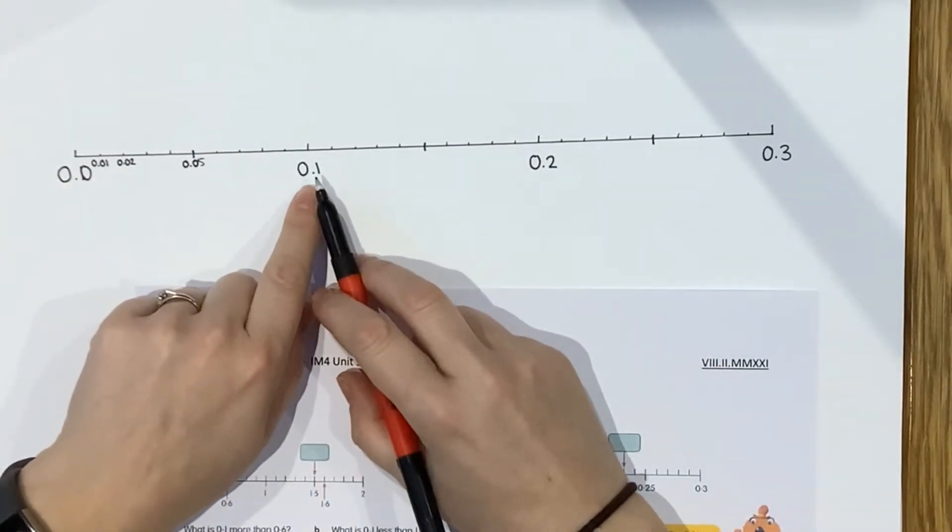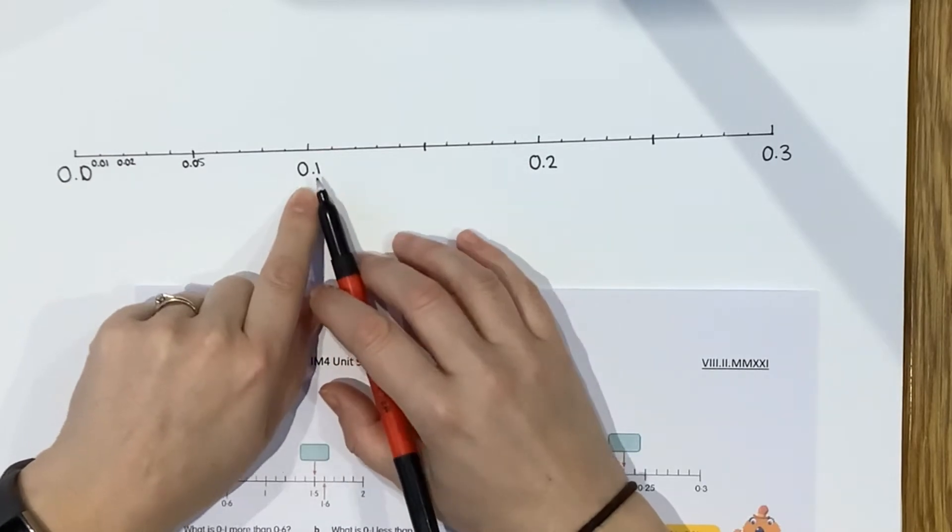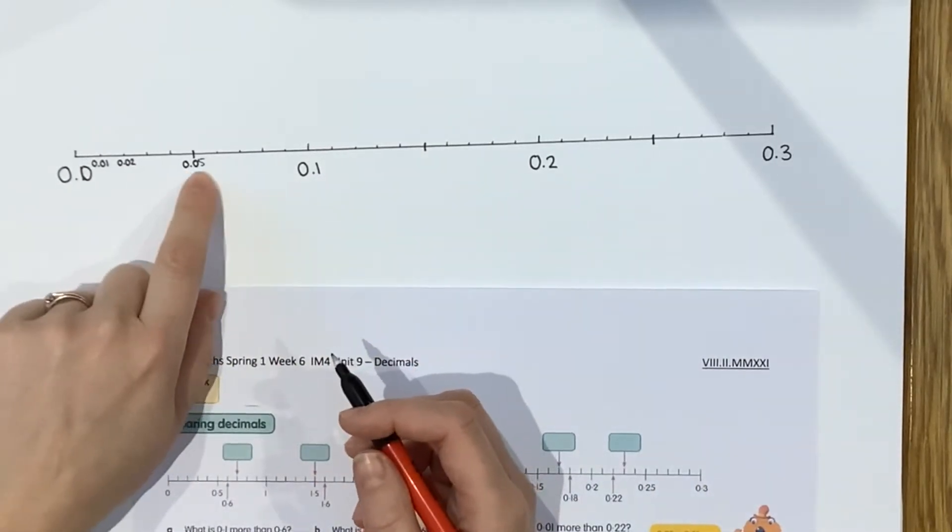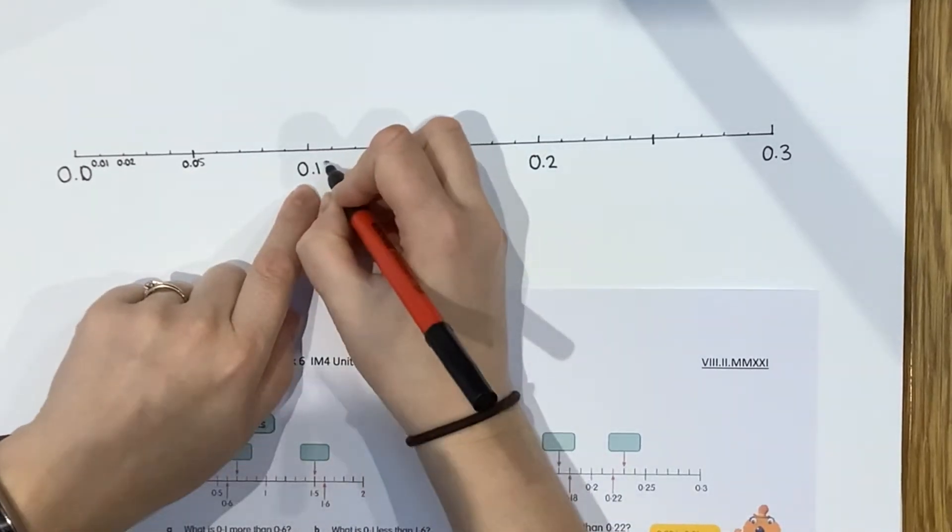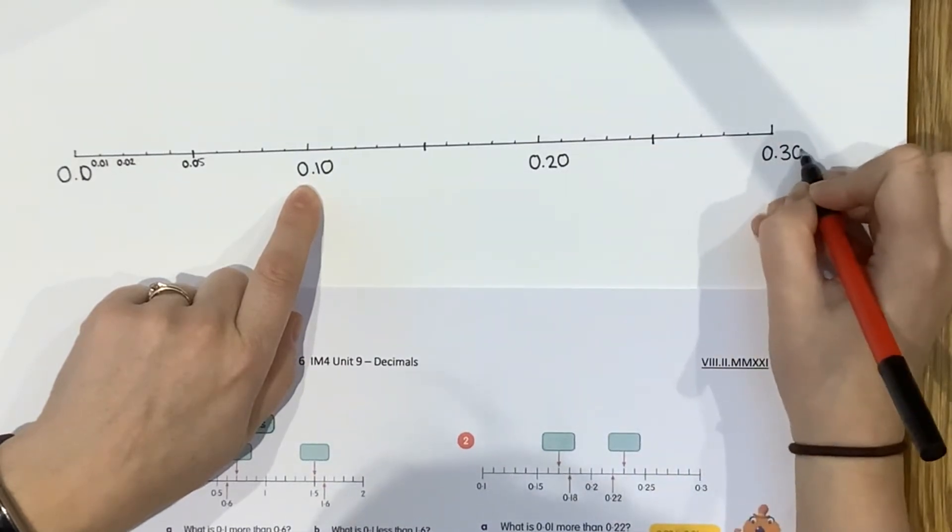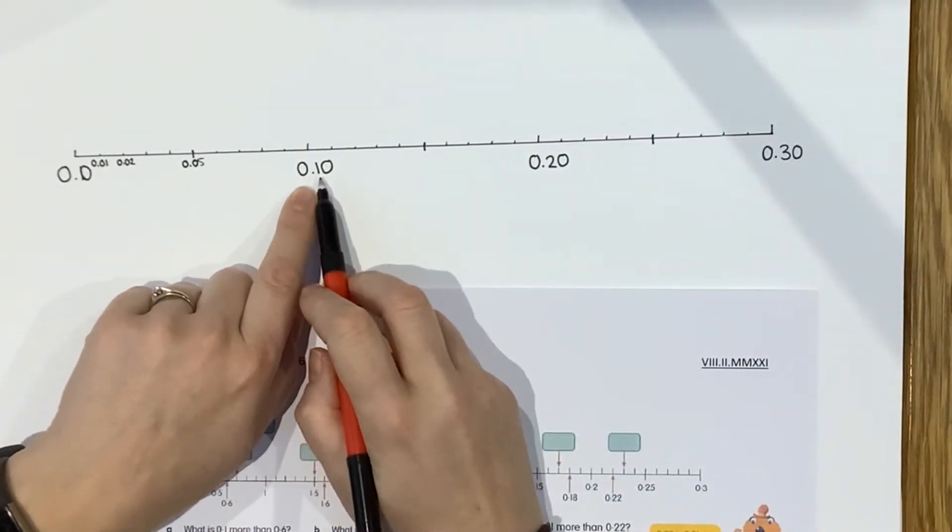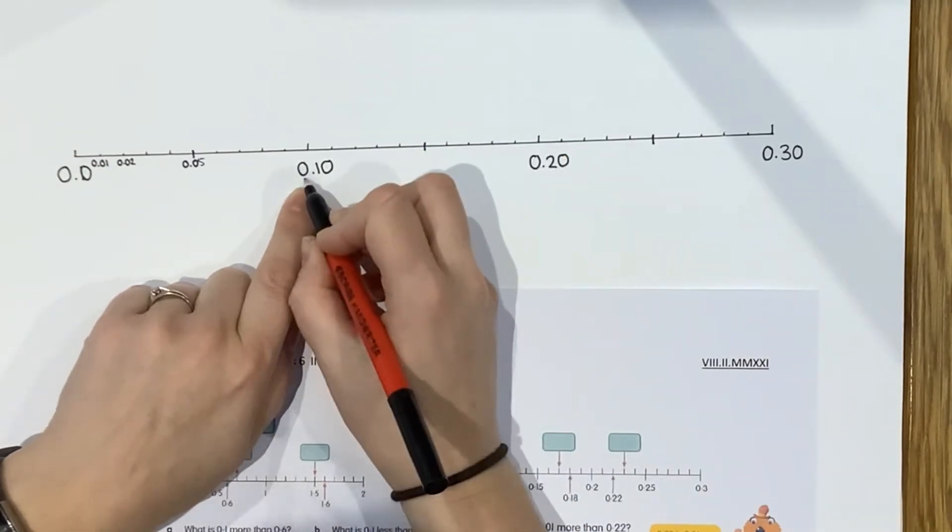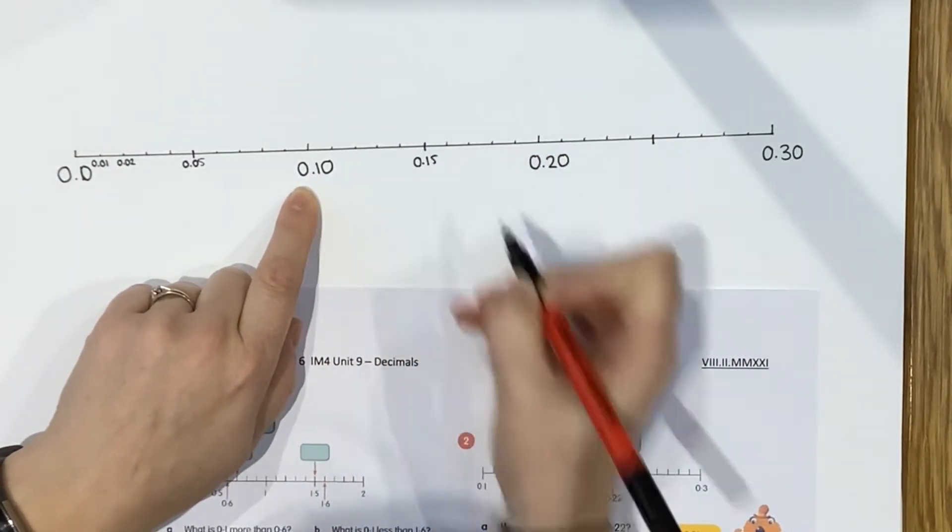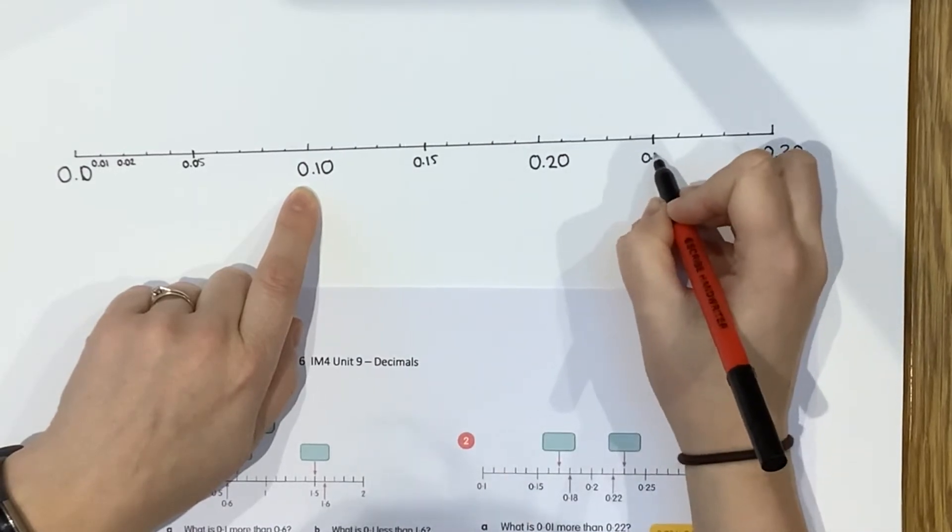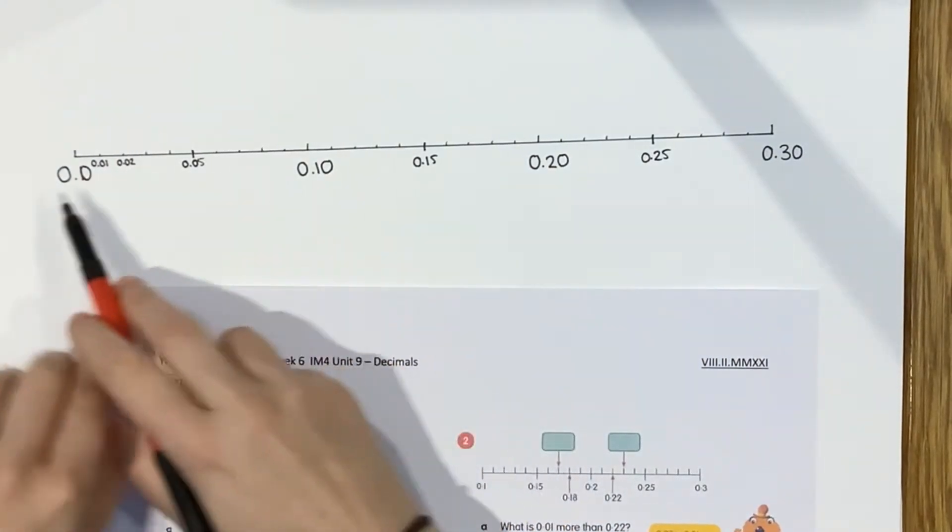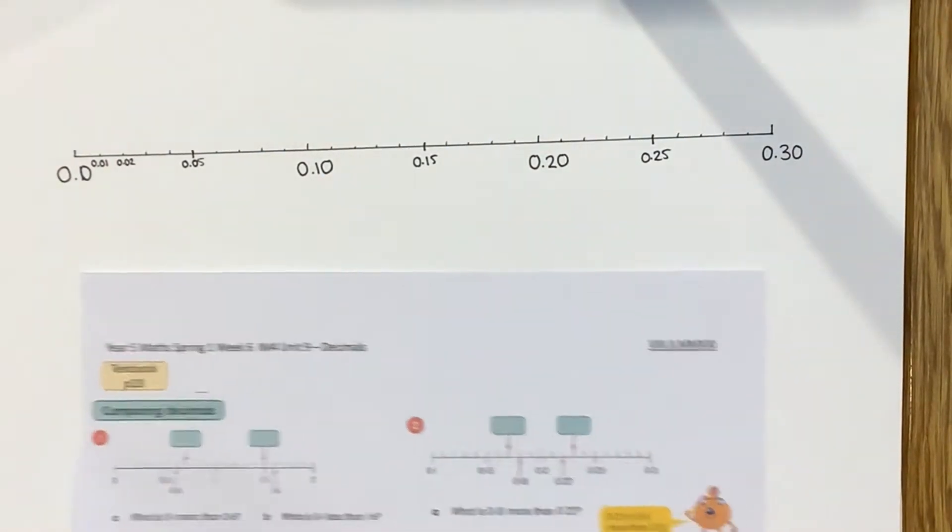Okay, so if I was going to work in the same way, what I would think is, this is a tenth, and it's split into ten, so each one of these must be a hundredth. So I would have 0.01, 0.02, and so on. I'm just going to mark the midpoints, 0.05. Now, I mentioned this last time, 0.1, you would write 0.1, but because we're using two decimal places, you might want to just put a zero on the end.